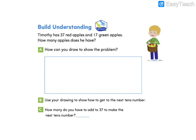Let's look at our build understanding. Timothy has 37 red apples and 17 green apples. How many red apples does he have? How can we draw to show this problem? Let's go ahead and use tens.